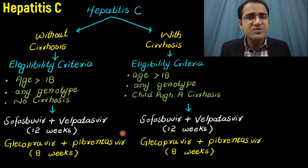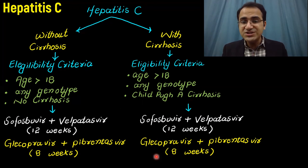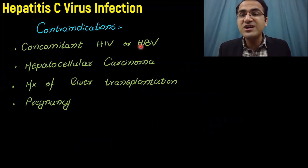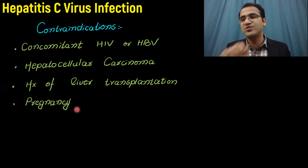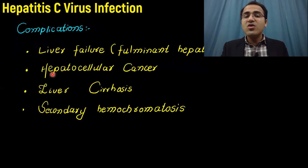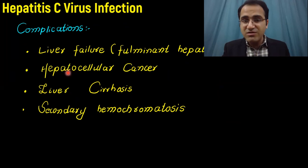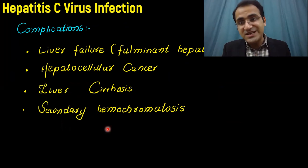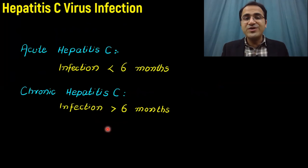Contraindications to direct-acting antiviral drugs include concomitant HIV or HBV infection, hepatocellular carcinoma, history of liver transplant, and pregnancy. Complications of HCV infection include liver failure, hepatocellular carcinoma, liver cirrhosis, and secondary hemochromatosis.